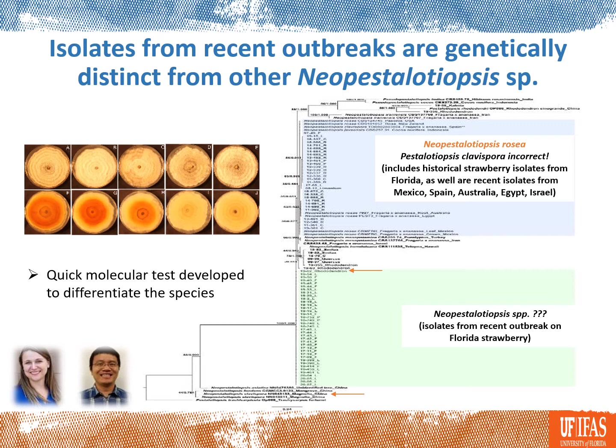One thing we know is that isolates from the recent outbreaks are genetically distinct from isolates that we collected historically on strawberry, as well as isolates from strawberry production areas in other regions. There are two clades: the blue one includes isolates collected historically in strawberry fields in Florida and elsewhere, and the isolates in the green box are isolates collected from recent outbreaks.